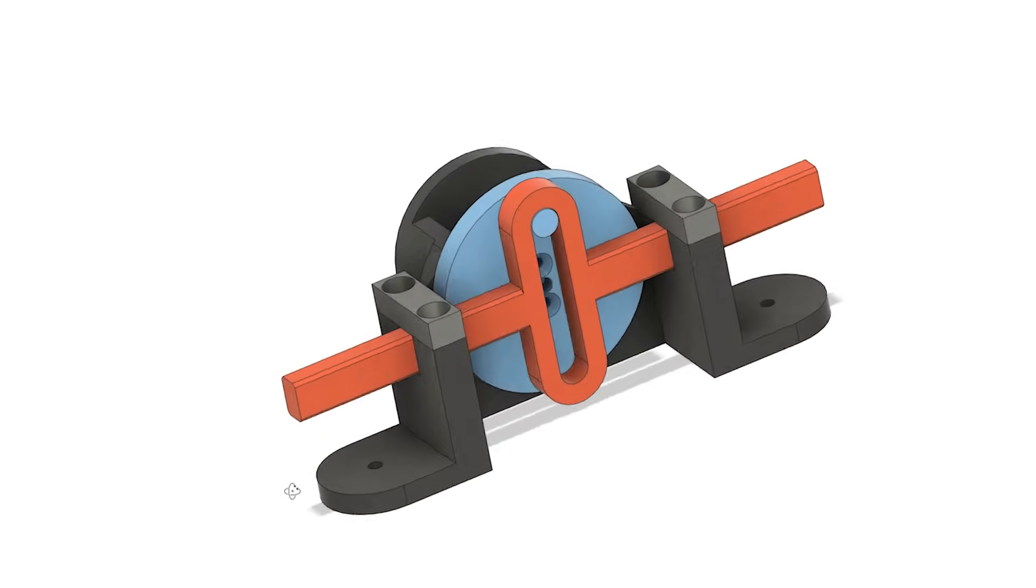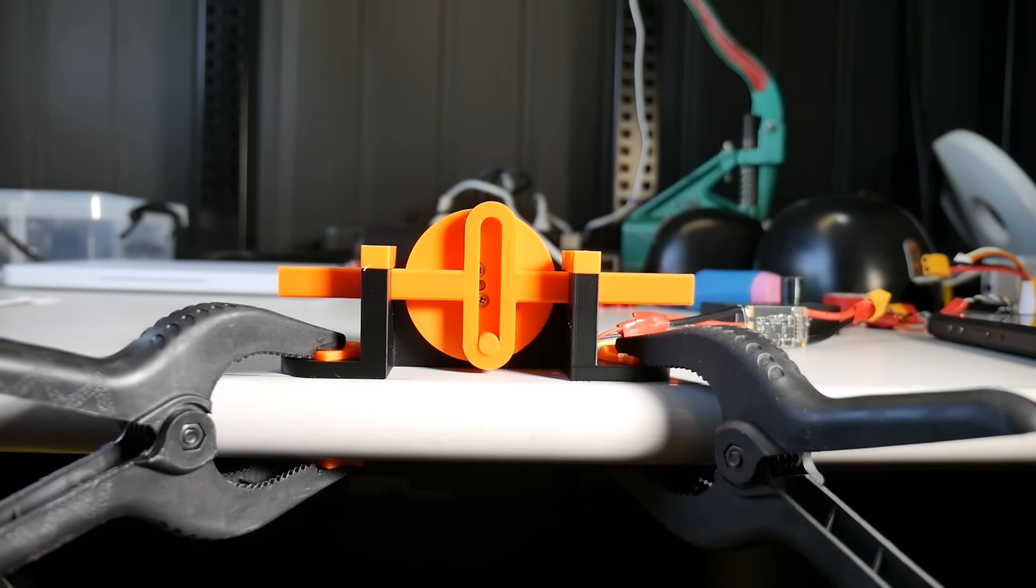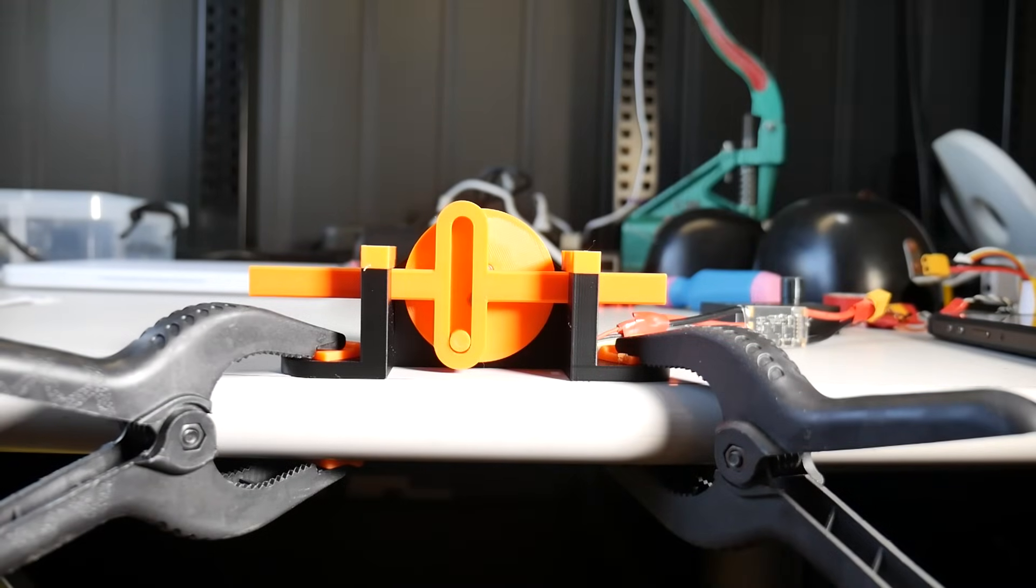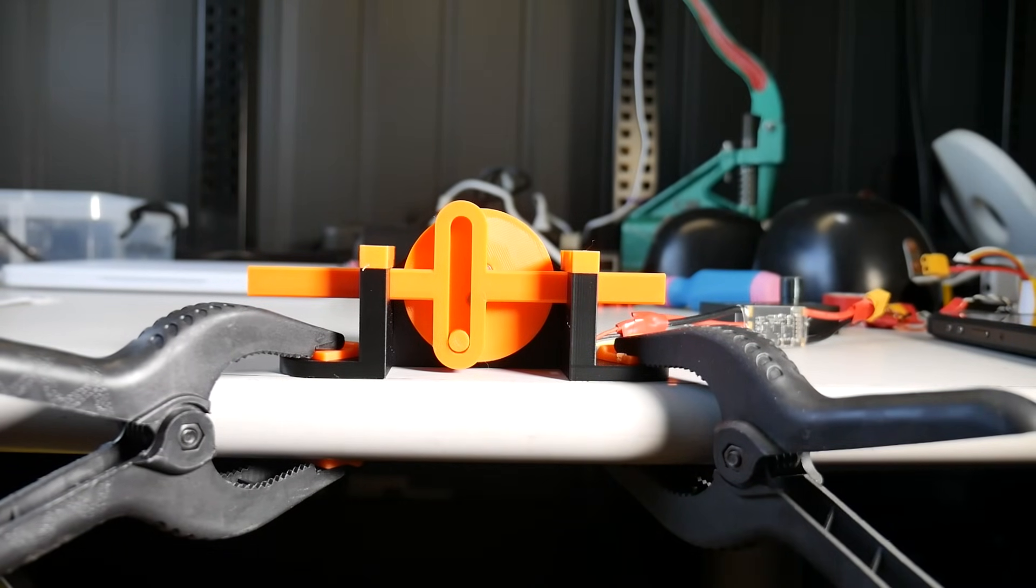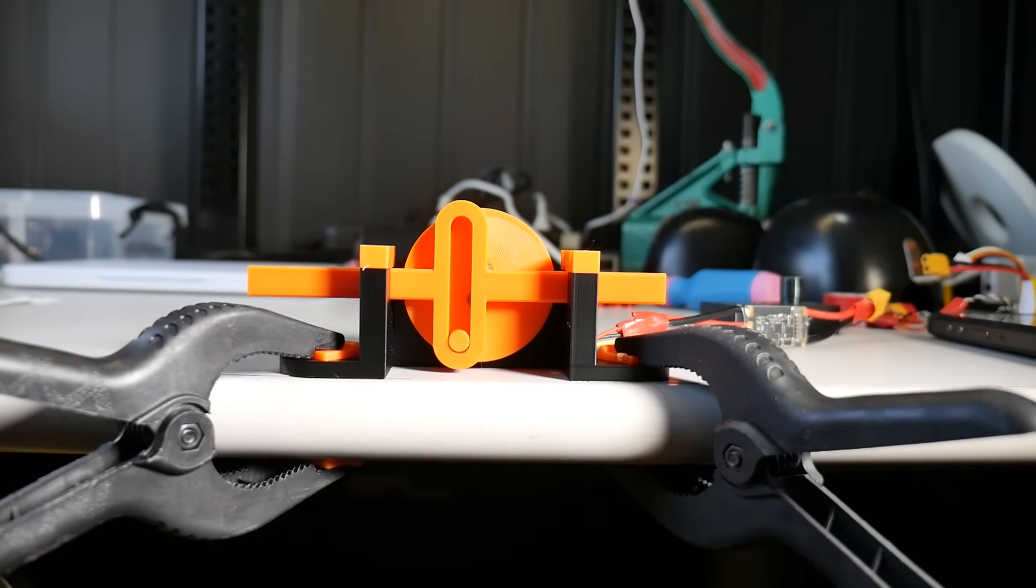But just how bad could it be? Well, to test it, I designed this Scotch yoke mechanism powered by a monstrously overpowered brushless motor. We know that these mechanisms have friction in the movements with the pin sliding and moving around. But what I want to test is just how bad that friction and vibration actually is. So what I'm going to do is power it up and spin it really, really fast, and see what happens.